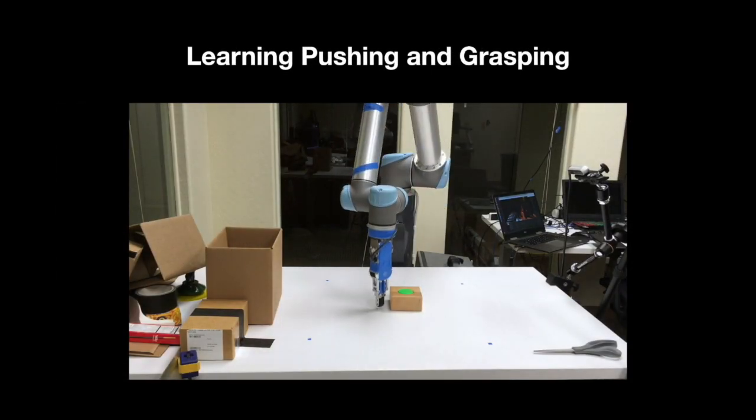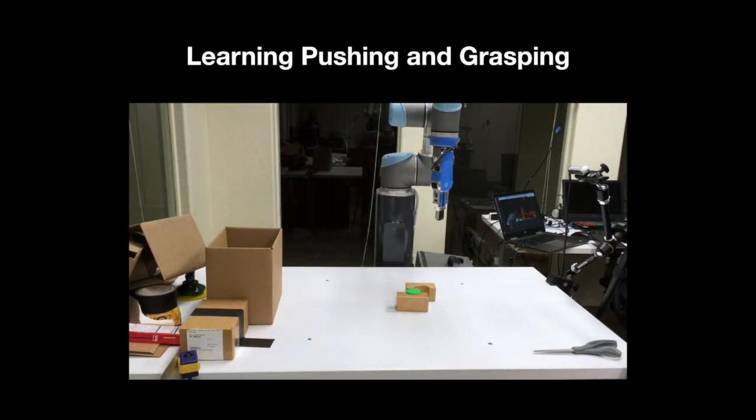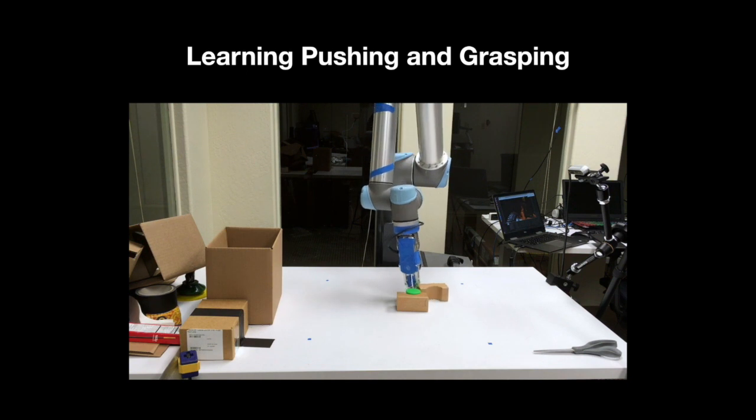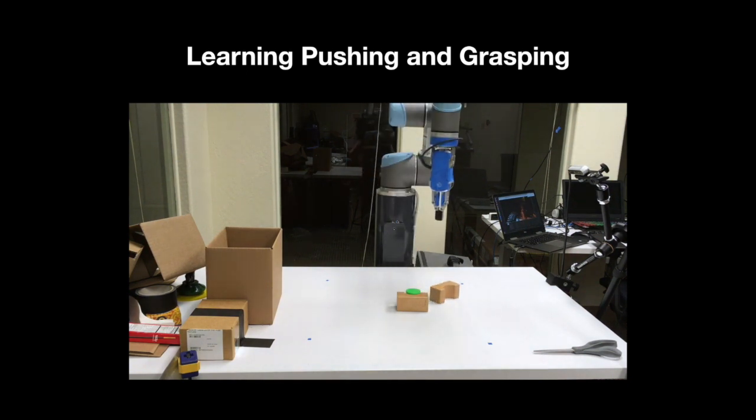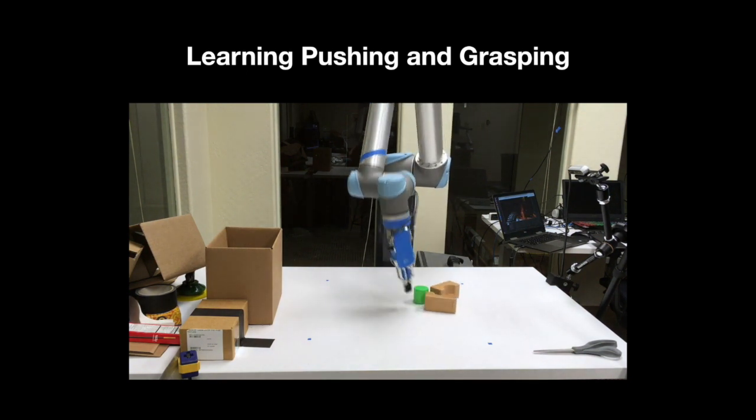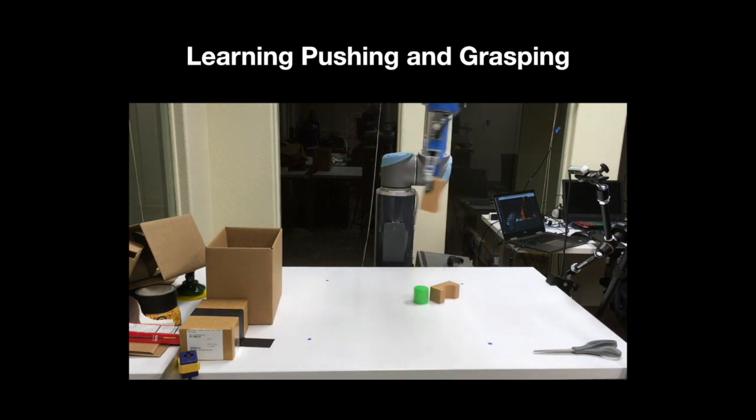In this work, we are interested in enabling robots to perform supporting actions like pushing in order to move objects apart and make grasping easier. The idea is that by doing so, robots can ultimately achieve more efficient and reliable picking.